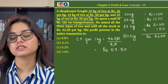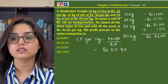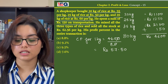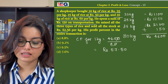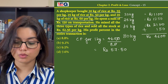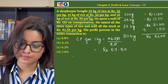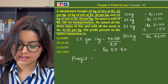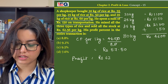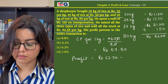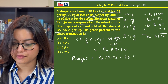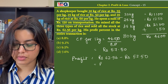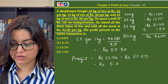Now, later in the question, they have told that the shopkeeper mixed all 3 types of rice and sold the entire stock for Rs 62.56 per kg. So what was the profit that he earned? Profit equals his selling price of Rs 62.56 minus his cost price of Rs 57.50, which gives us Rs 5.06.